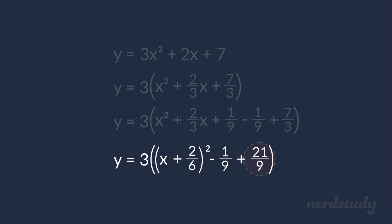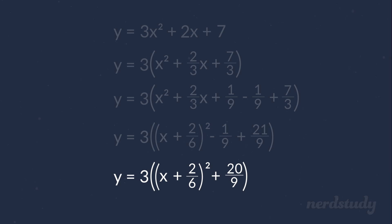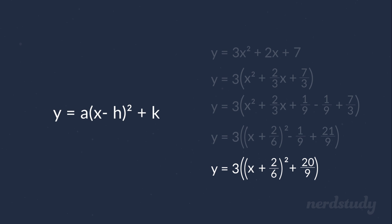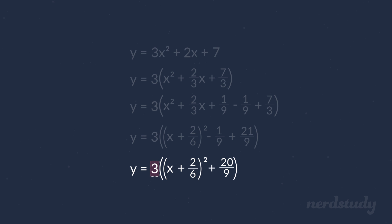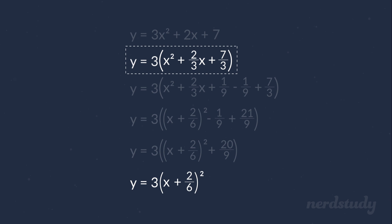Let's change this to 21 over 9 so they have the same denominator, in which we can now simplify this to get plus 20 over 9. Now we have one more step to go. Our vertex form looks like this, so whatever is outside of this part being squared needs to be completely outside of the brackets. Right now, everything is being multiplied by 3 still, and we factored out this 3 as our first step. So let's undo that by distributing the multiplication of 3 to both terms. What we get is 3 times bracketed x plus 2 over 6 squared, which we don't simplify any further, and then we get 3 times 20 over 9, which can be simplified down to 20 over 3.